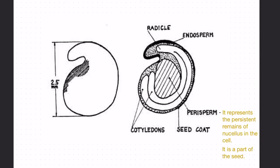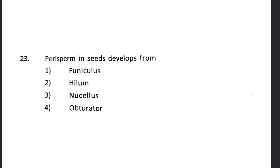What is perisperm? Perisperm is the remnant part of the nucellus. In this figure, perisperm is labeled and it shows that it represents the persistent remains of nucellus in the seed. So our answer will be number 3, Nucellus.